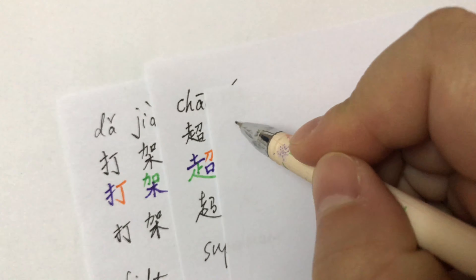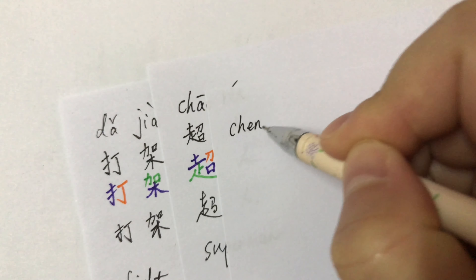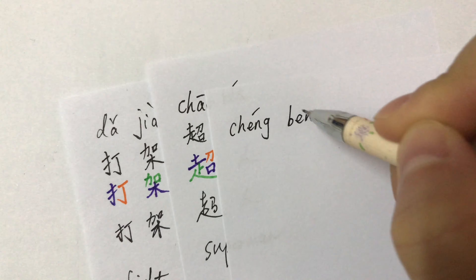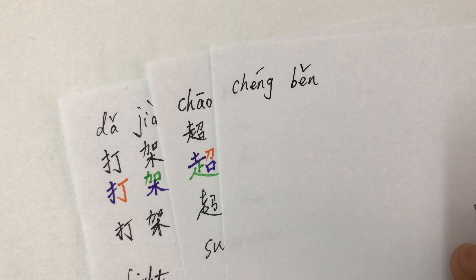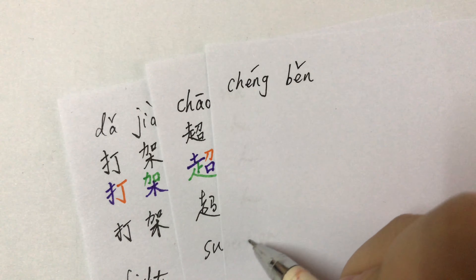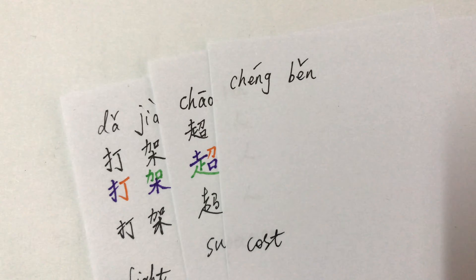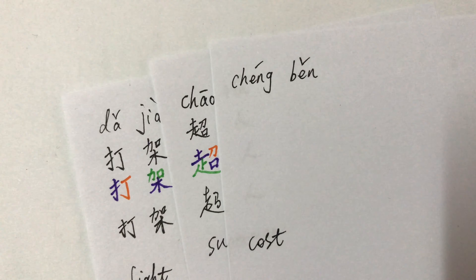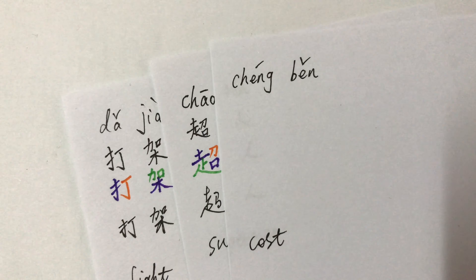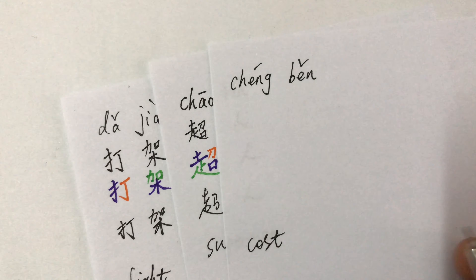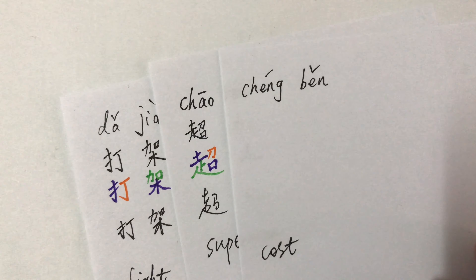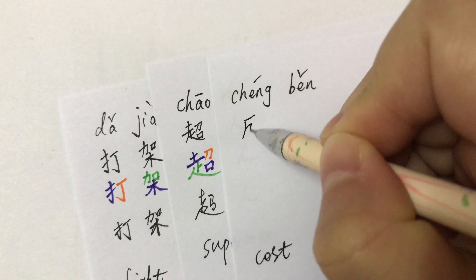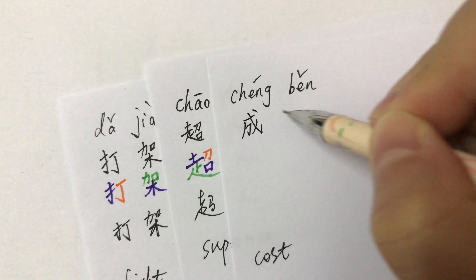The third one for today: 成本, 成本. 成本 means 'cost.' For example: 'What is the cost of living in that country?' 在那个国家的生活成本是多少. 成本.